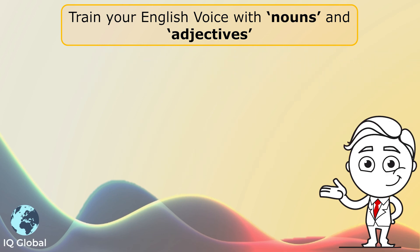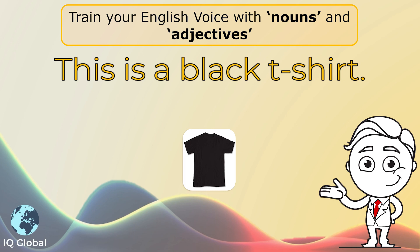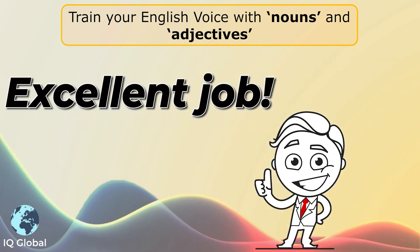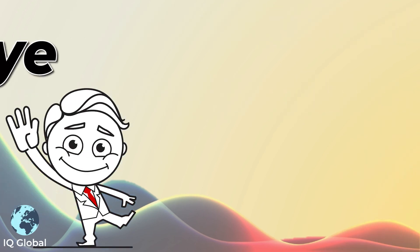Another example. This is a black t-shirt. The word t-shirt is the noun — it names what this is. And the word black tells us more about this t-shirt, so black would be the adjective. Excellent job with nouns and adjectives. Goodbye.